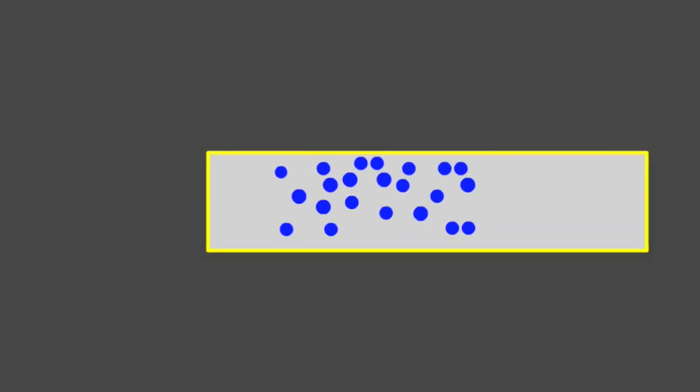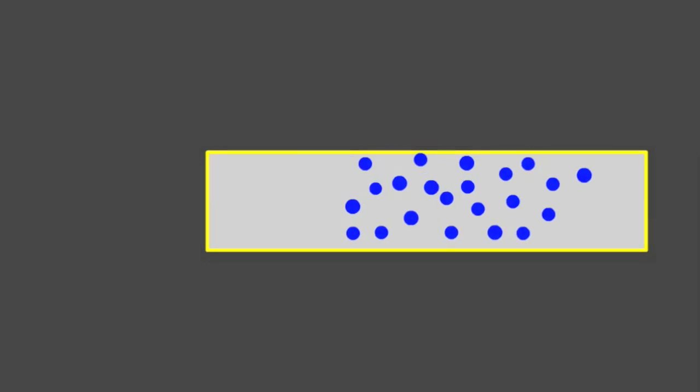It is this drift which is an electric current, and the average speed with which the electrons drift is called the drift velocity.